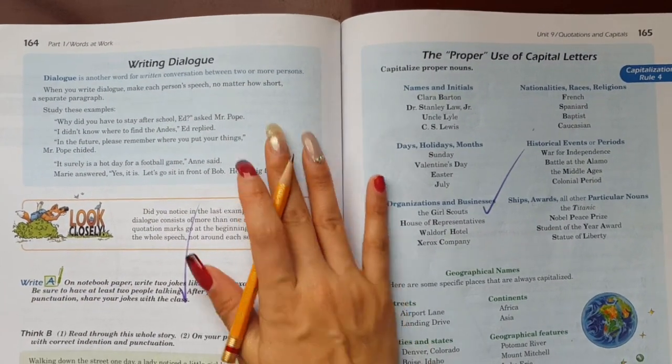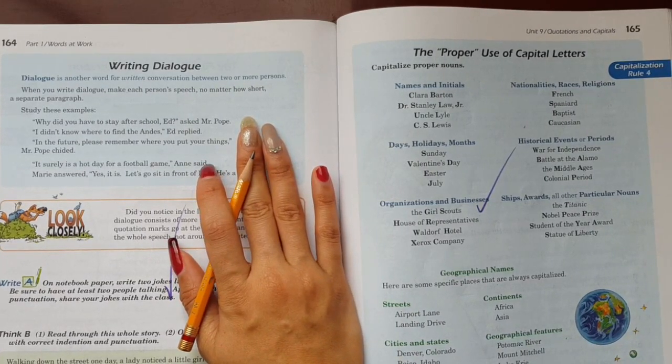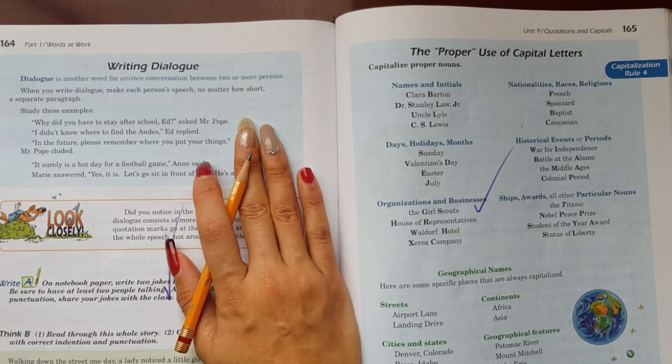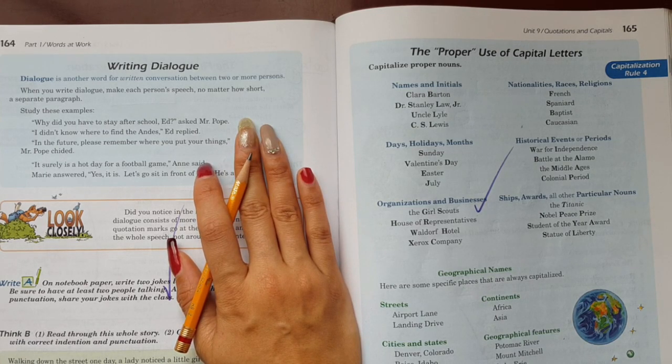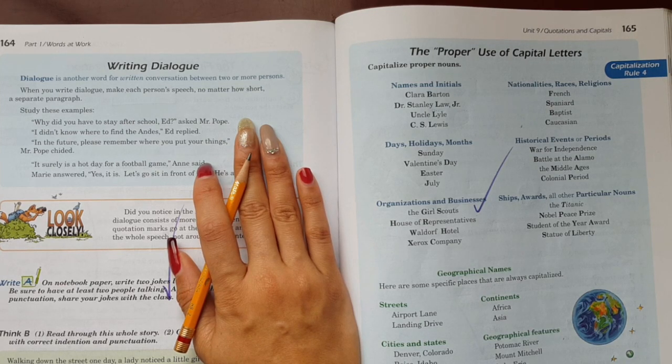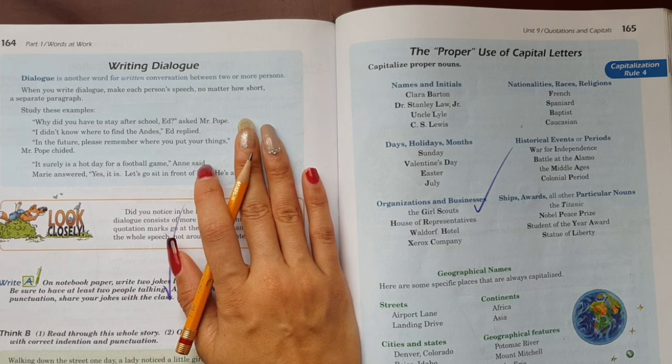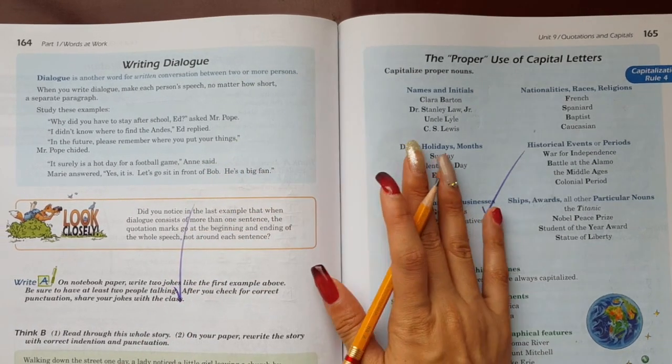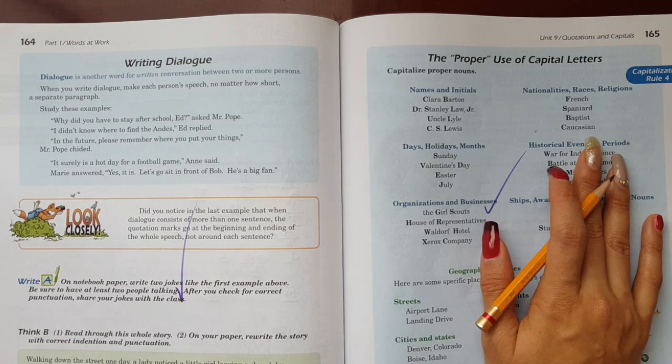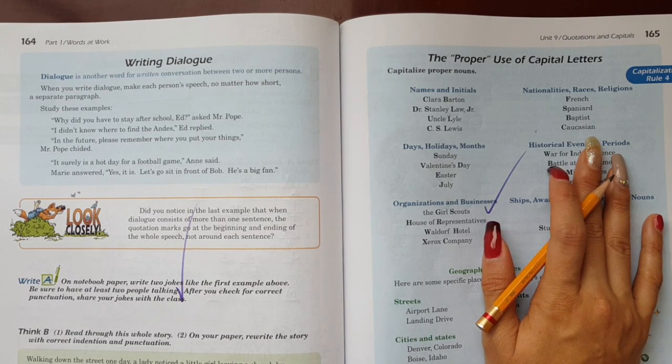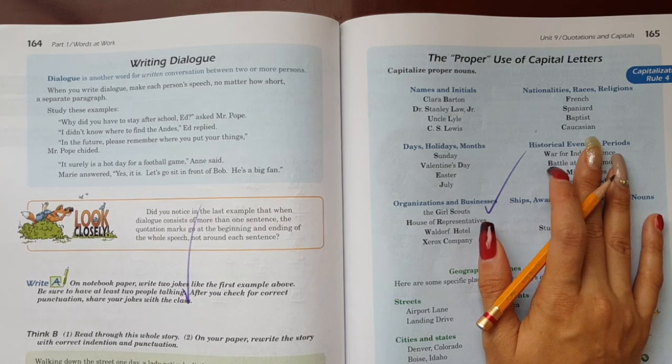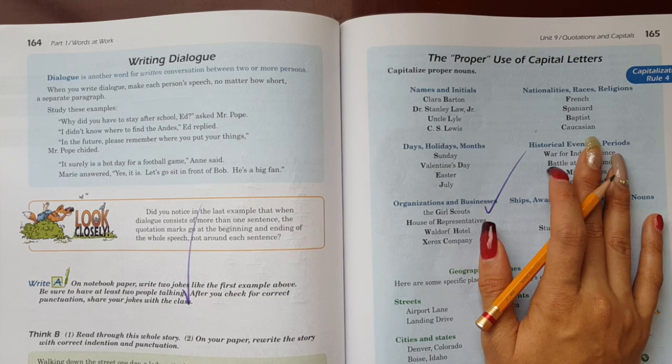Right, so now let's move on to page number 164. And here it says writing dialogue. Here it says dialogue is another word for writing conversation between two or more persons. It's another word to write conversations between two or more people. That's called a dialogue. Like when you see there's a novel and they have the script, they give it to the actors. When they're going to speak, what they're going to speak is the dialogue, what they're going to say between two or more people.